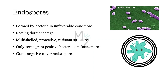Endospores are formed by bacteria in unfavorable conditions, like desiccation, food scarcity, and temperature extremes. The endospore is the resting dormant state, meaning that bacteria can survive in it for centuries. Whenever the spore finds favorable conditions, it will convert back into bacteria. If you want to know more about the endospore life cycle, I do have a detailed video on that. Endospores are multi-shelled protective and resistant structures, which is why they are formed in unfavorable conditions. Only some gram-positive bacteria can form spores, like Clostridium and Bacillus.